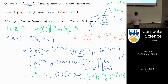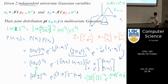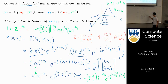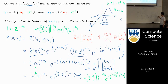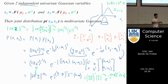Now let's consider 3A — actually let's make the constant 4 to make it clearer. So 4 times the matrix gives entries 4×2 and 4×3 on the diagonal. The determinant is 4×2 times 4×3, which equals 4² times 2×3, which is 4² times the determinant of A. So if you have a constant and you take the determinant, that constant takes the power of the size of the matrix. The matrix is 2×2, so the constant gets the power 2.